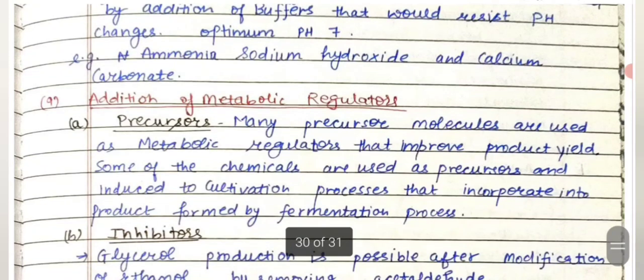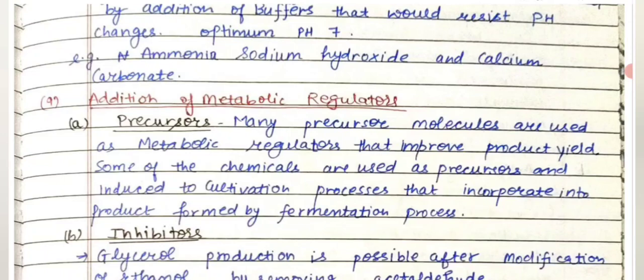Then we have the addition of metabolic regulators like precursors. Many precursor molecules are used as metabolic regulators that promote product yield. Some chemicals are used as precursors and introduced into the cultivation process, where they are incorporated into the product formed by the fermentation process.